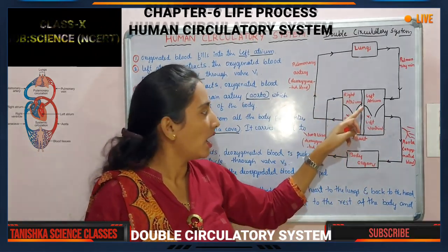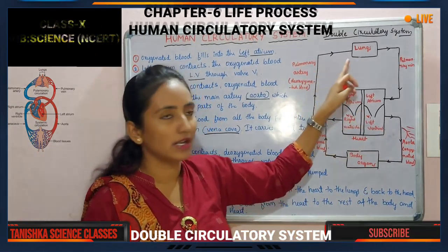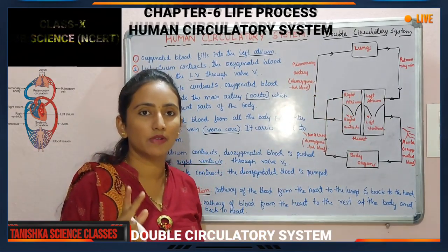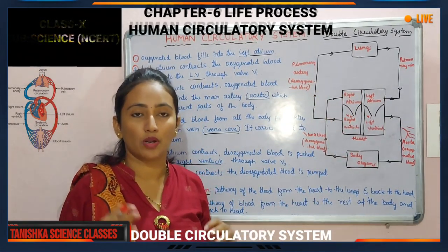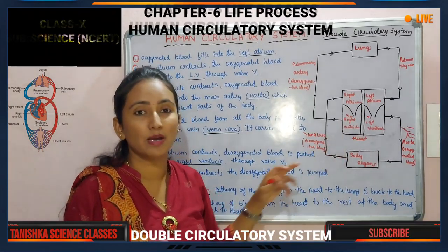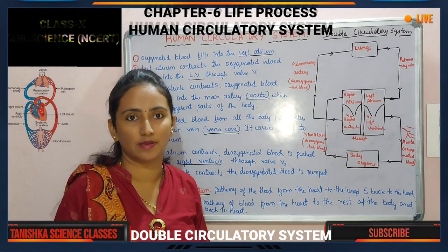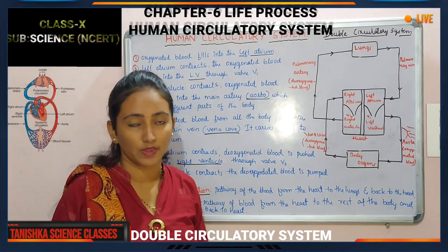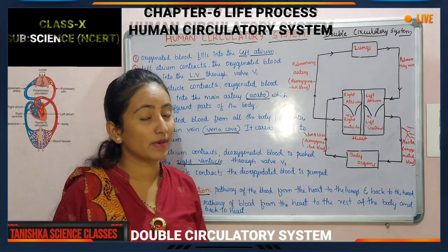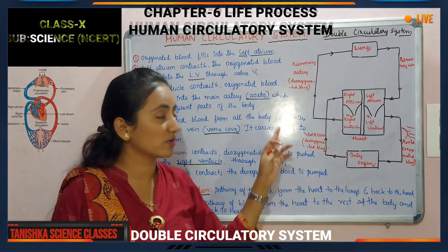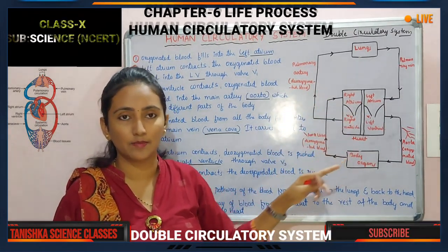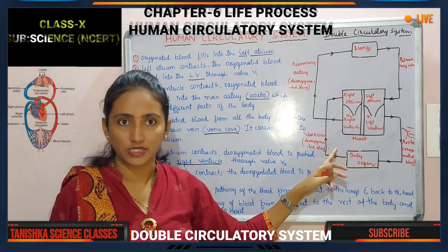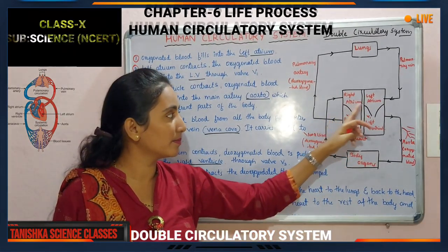During this one complete cycle, blood will go to the heart twice: once as oxygenated blood from the lungs to the heart, then from the heart to all body organs, and from the body organs back to the heart, and then from the heart to the lungs again. Because blood comes to the heart twice, this is called the double circulatory system.